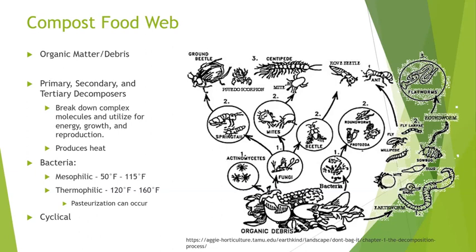When all ingredients are present to create the optimal habitat, mesophilic bacteria will colonize the compost within a few days. As the mesophilic bacteria feed and reproduce, temperatures within the pile will increase. Mesophilic bacteria are active from 50°F to 115°F. As compost temperature approaches and exceeds 120°F, thermophilic organisms will take over as the primary decomposing colony, and are most active from 120°F to 160°F.